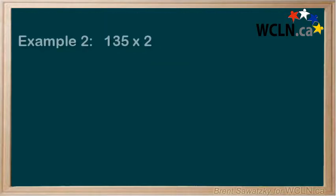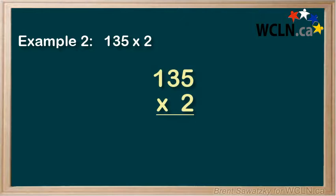Example 2: 135 times 2. Again, let's line it up like this. We're multiplying the 2 on the bottom by each of the digits in the upper number going from right to left. So we'll start with 2 times 5 equals 10.